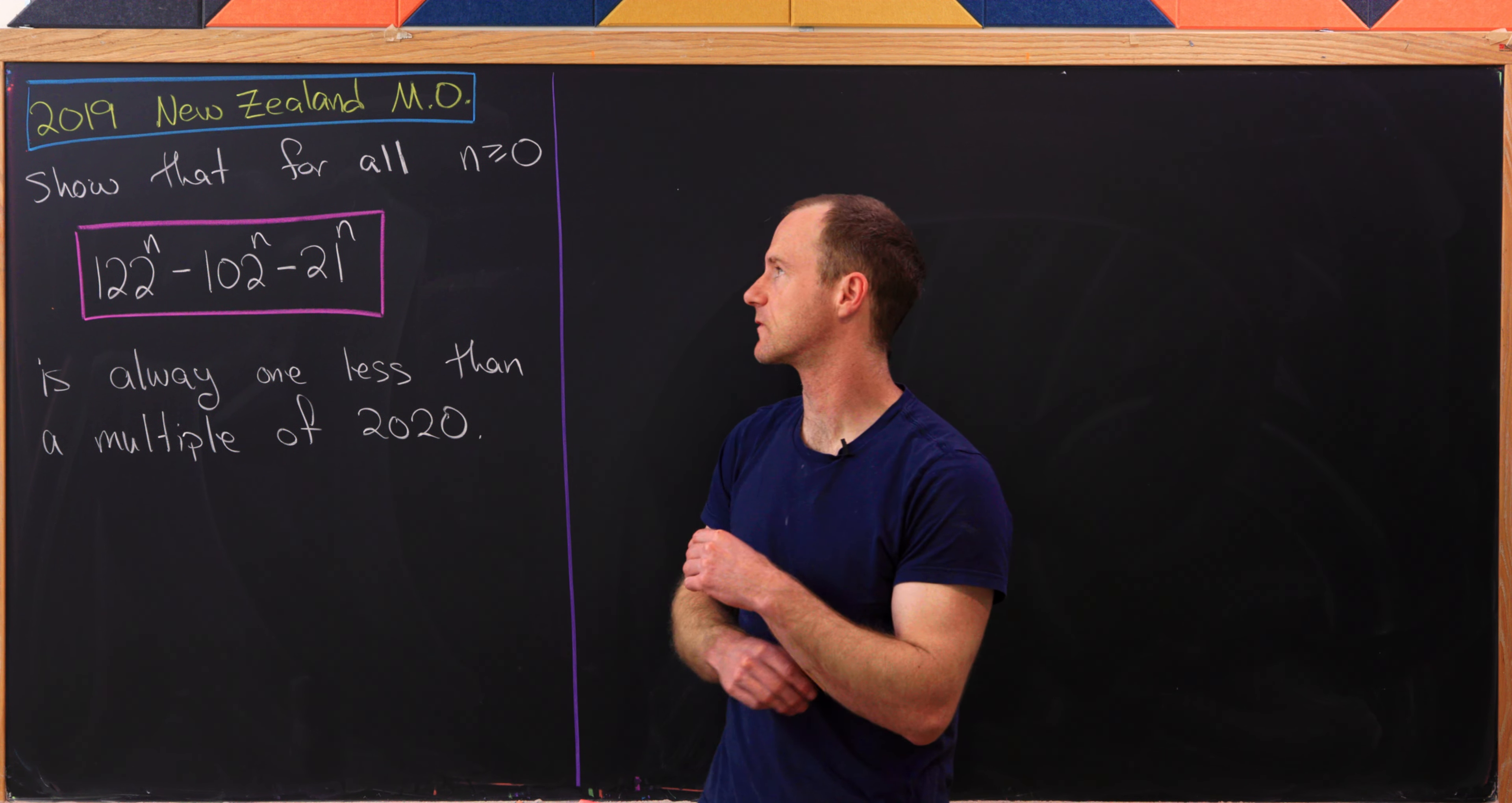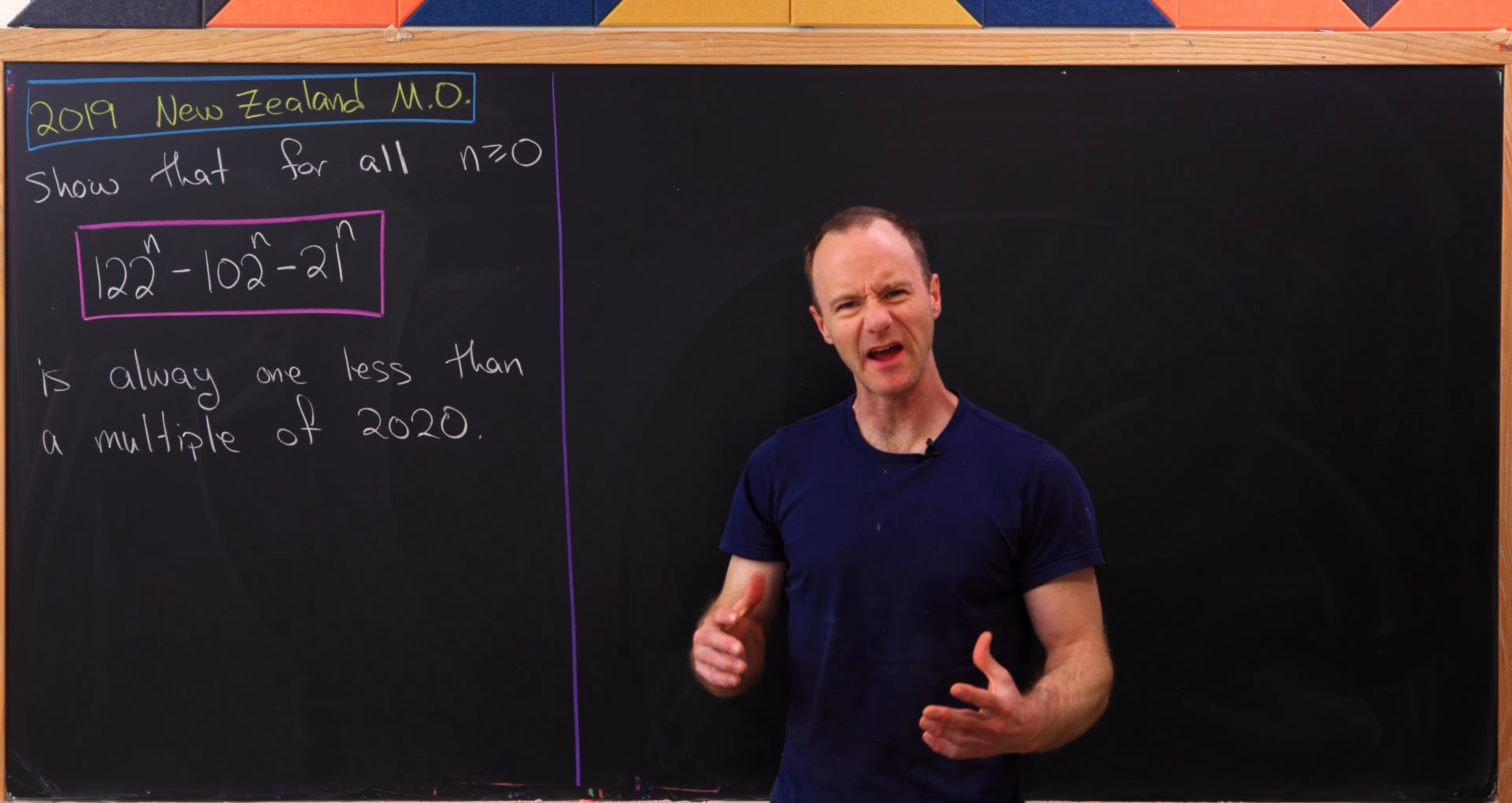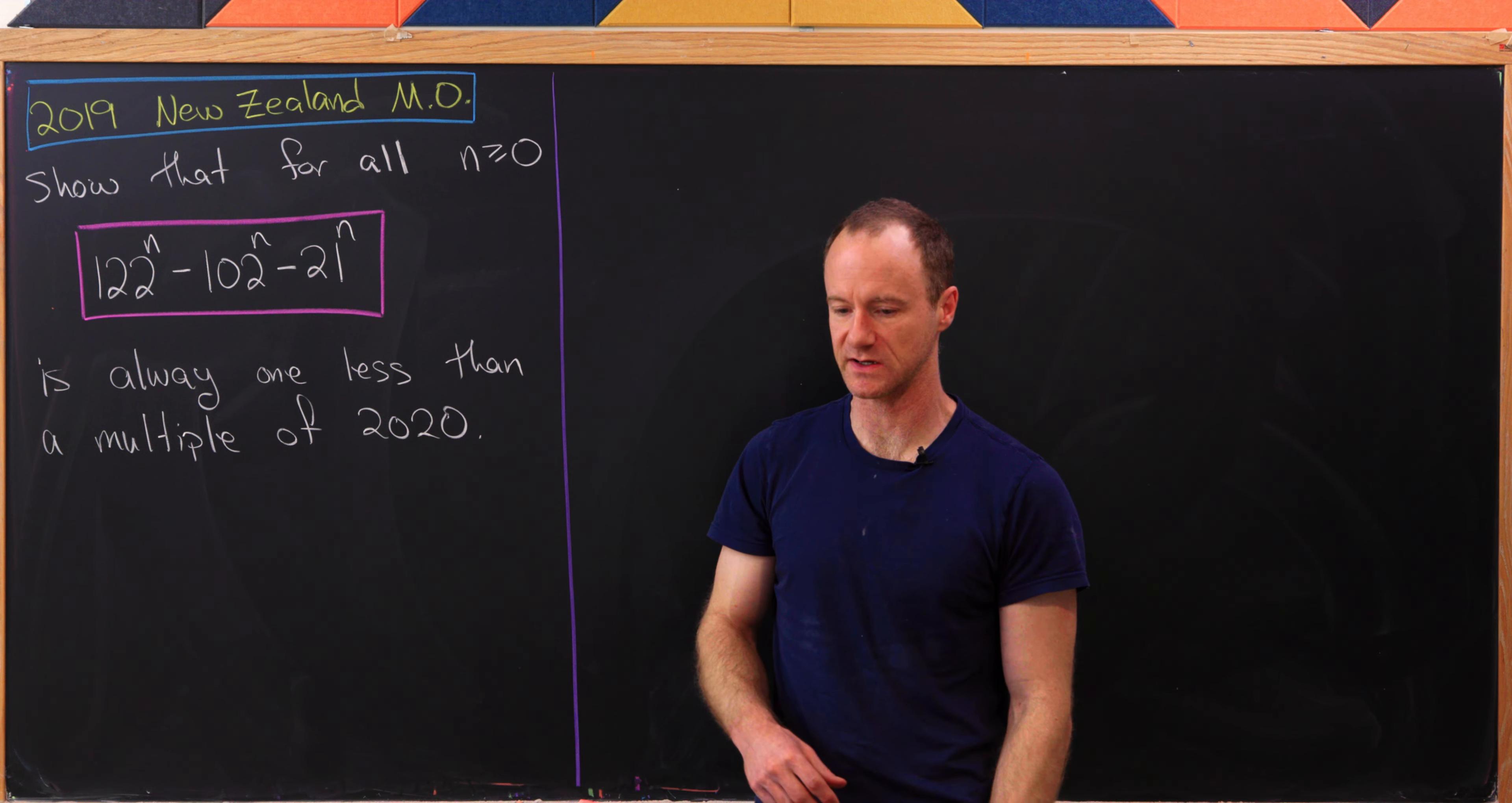Today I've got a really nice problem from the 2019 New Zealand Math Olympiad. What I like about this problem is, at least the solution I came up with is a little bit of a roundabout solution. I think it could be made more efficient. But that being said, what I think is nice about the solution is that it uses a lot of nice techniques that you should be familiar with if you want to do math contests.